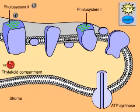Next, ATP and NADPH are used in the sugar-making process of the Calvin cycle.